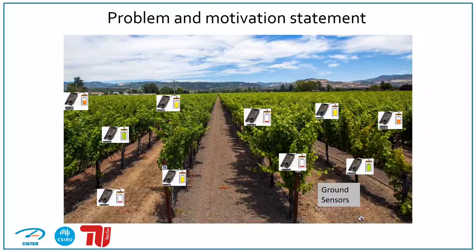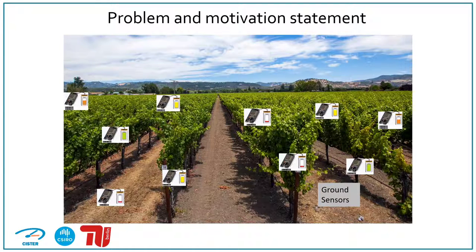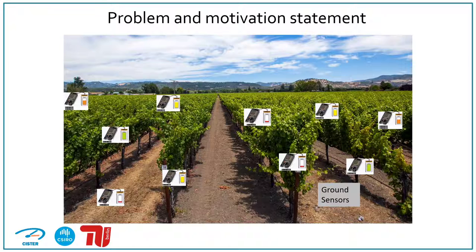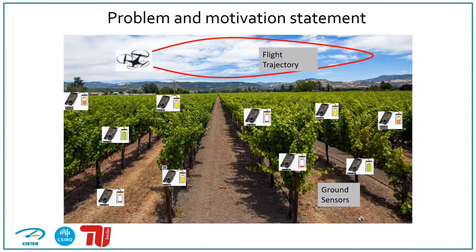Newly arrived packets of the ground sensors will have to be discarded due to a buffer overflow — for instance, when the network has too many sensors for data collection, or when the trajectory of the UAV is not carefully planned. The only solution to this problem is a careful selection of the ground sensor through trajectory planning that can minimize the packet loss from these buffer overflows.